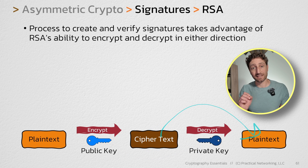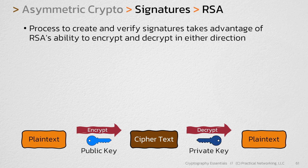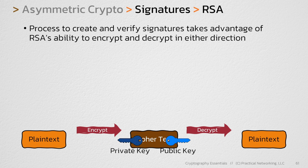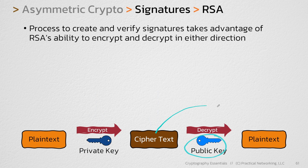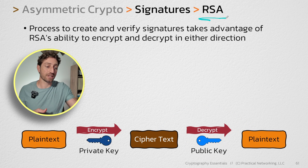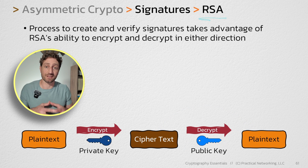At the end of that lesson, I told you that it also works in the other direction, which means you can take the value known as the private key and use it in RSA encryption to create some ciphertext, and then you can take the correlating public key to turn that ciphertext back into the same plaintext. That feature is what RSA takes advantage of in order to create a signature.